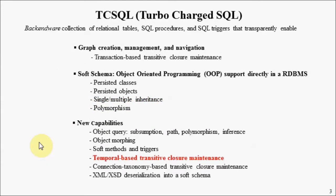To address the challenges identified in the last slide, we're going to look at a technology called TCSQL. In particular, we're going to look at its ability to maintain transitive closure through time. So as nodes and connections are added or deleted in a graph, the transitive closure is maintained keeping a record, a historical record of those changes.